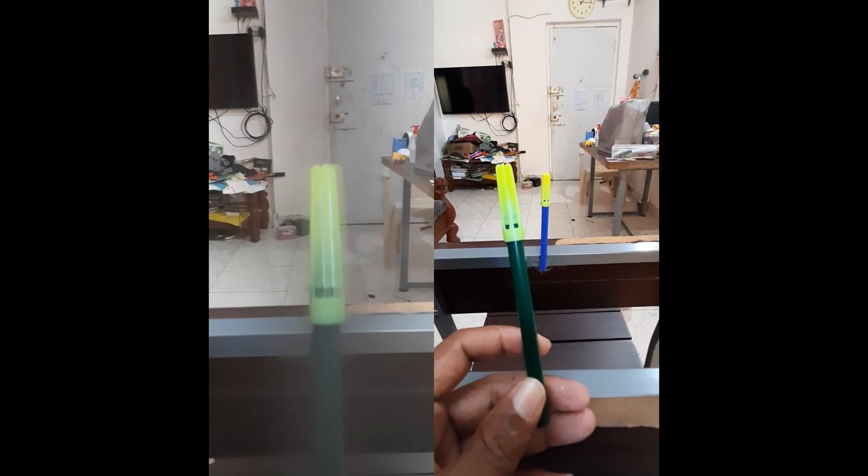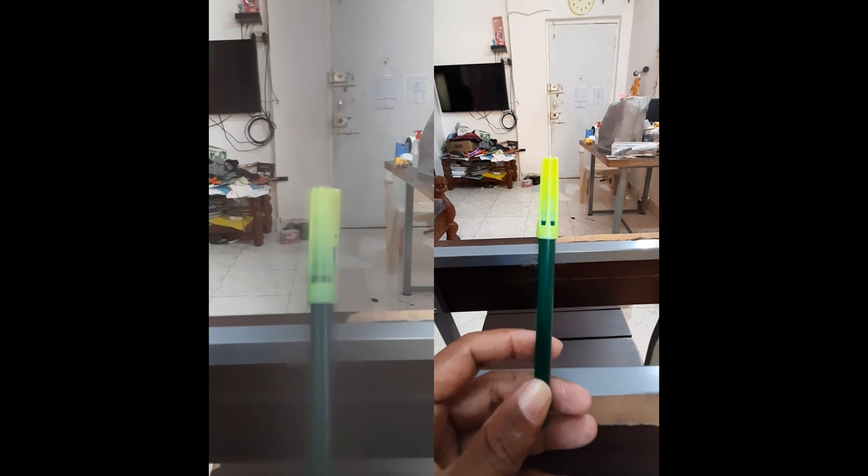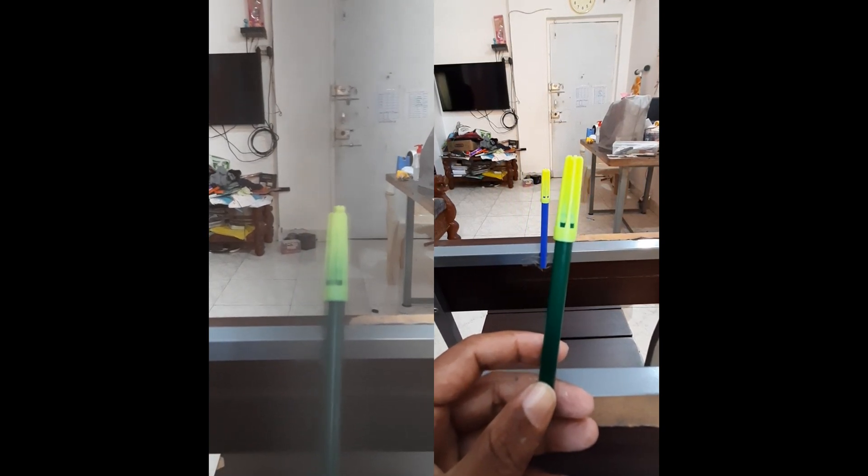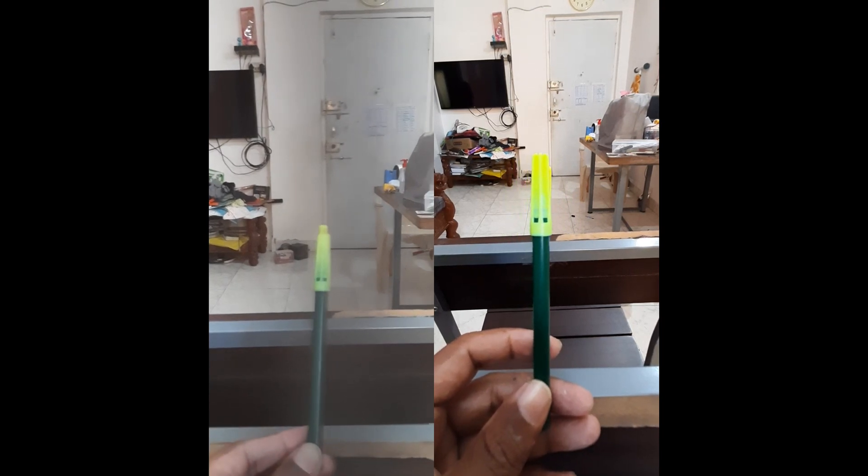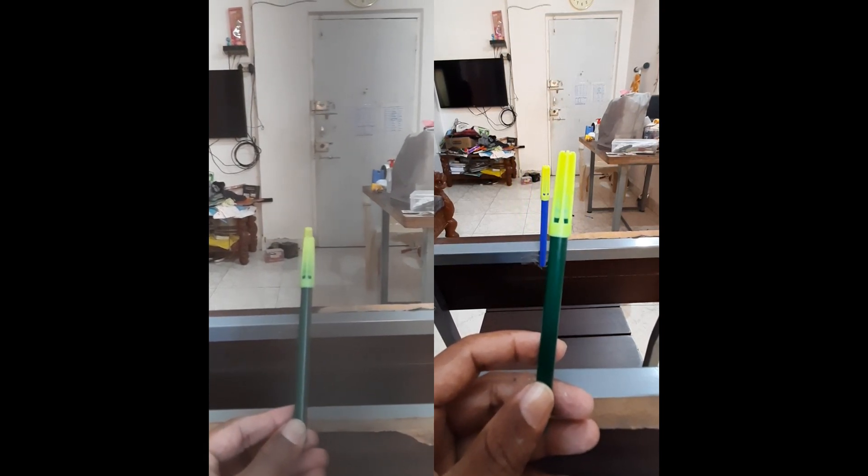each eye sees it from a slightly different angle and sends these images to the brain. The differences between the two images are integrated into a single one, and the differences are used to create the 3D illusion.